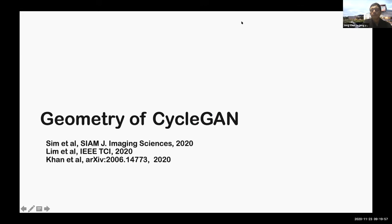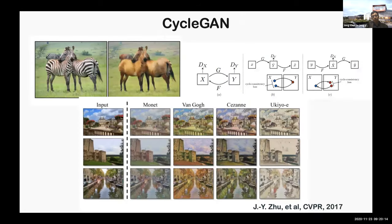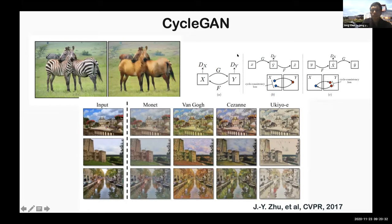We'll now discuss how optimal transport theory can be used to design unsupervised learning approaches for inverse problems. For example, converting a zebra to a horse or a photo to paintings of Monet, Van Gogh, Cézanne, and Ukiyo-e — this is an unsupervised learning problem without matched pairs. To solve this, CycleGAN was proposed. The basic idea of CycleGAN is to overcome the shortcoming of supervised learning that requires paired data, by learning a generator that makes a zebra into a horse and a generator that makes a horse into a zebra simultaneously. When input data passes through both generators, it should return to the original — this self-consistency is the key element of CycleGAN.